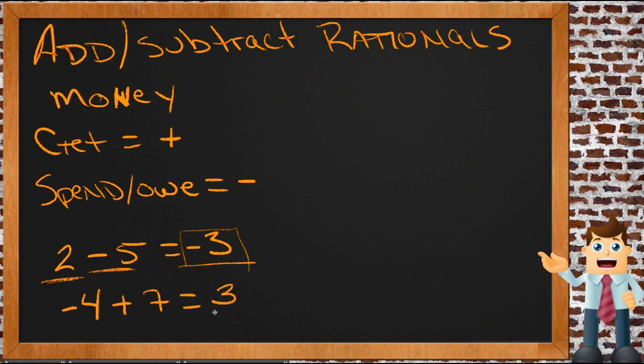So from a conceptual standpoint, thinking about money can help a lot. Just think of positive values as money that you're getting or money that you have, and negative values as money that you're spending or money that you owe. And I think you'll find that that clears it up a whole lot, particularly for a student who likes to think in pictures. Now the other way to look at it, if you are the kind of person who likes rules.